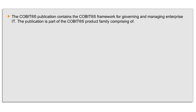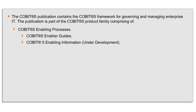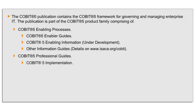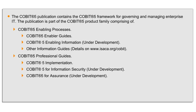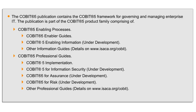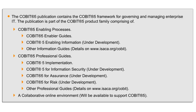The COBIT 5 publication contains the COBIT 5 framework for governing and managing enterprise IT. The publication is part of the COBIT 5 product family comprising enabler guides, enabling processes, and enabling information. Additional professional guides include COBIT 5 Implementation, COBIT 5 for Information Security, COBIT 5 for Assurance, and COBIT 5 for Risk — several of which are under development. Further details are available at www.isaca.org/cobit. A collaborative online environment will also be available to support COBIT 5.